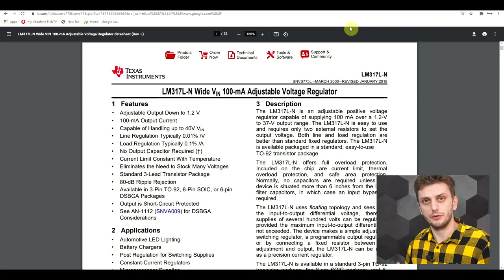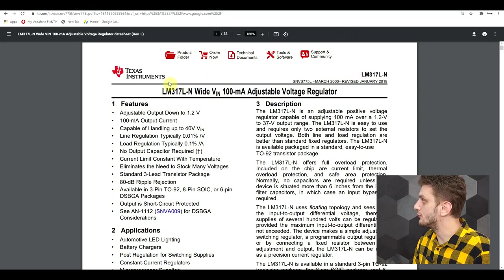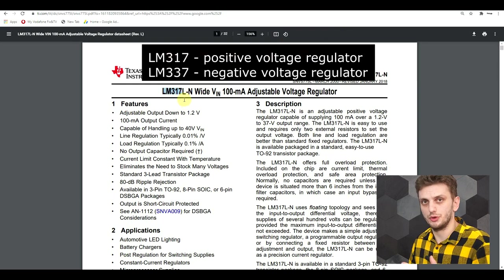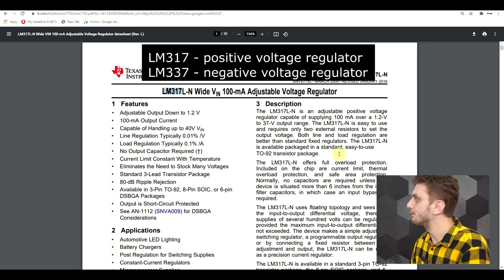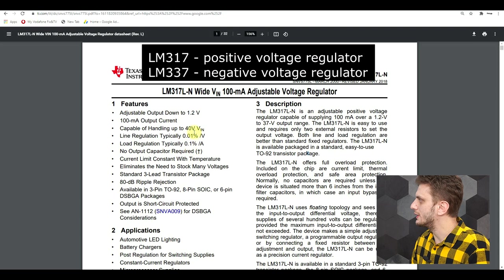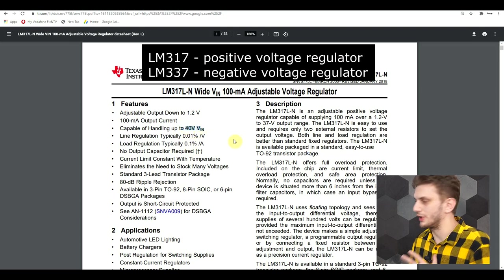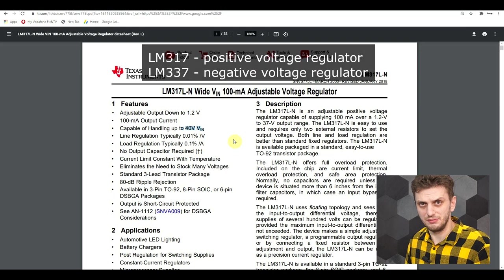Now one of the few linear regulators that also has a negative voltage version available is the LM317 and you also have the LM337. And now this component is a 40 volt regulator, so it's not really helpful.